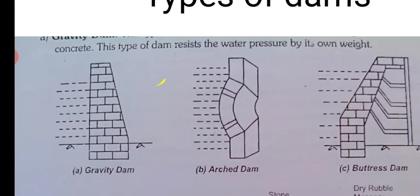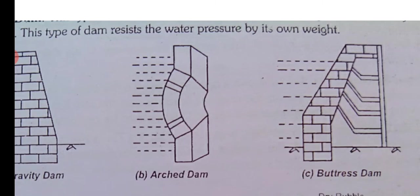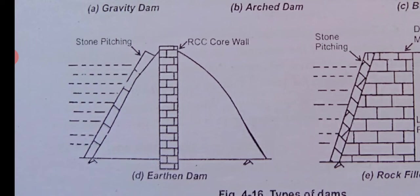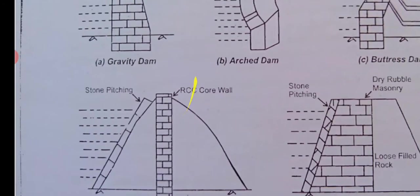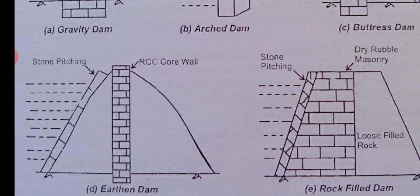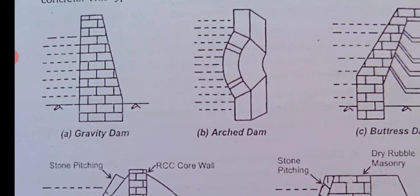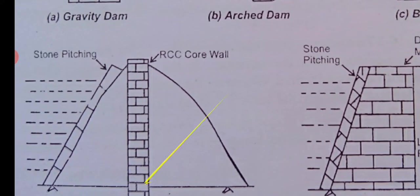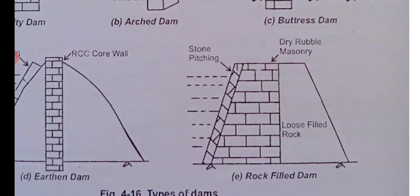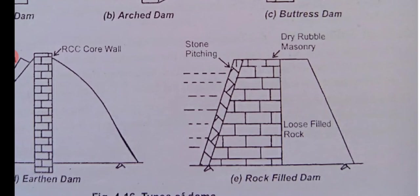Regarding types of dams: a gravity dam is built in the conventional way. Then you have an arched dam, a buttress dam, and an earthen dam where only the central core is an RCC wall and it is made of earth, with stone lining and pitching given on the surface. The top level thickness is less, but as you go down, because water pressure increases, the area becomes larger to withstand the water pressure. Lastly, there is the rock-filled dam, where dry rubble masonry and stone pitching are done.